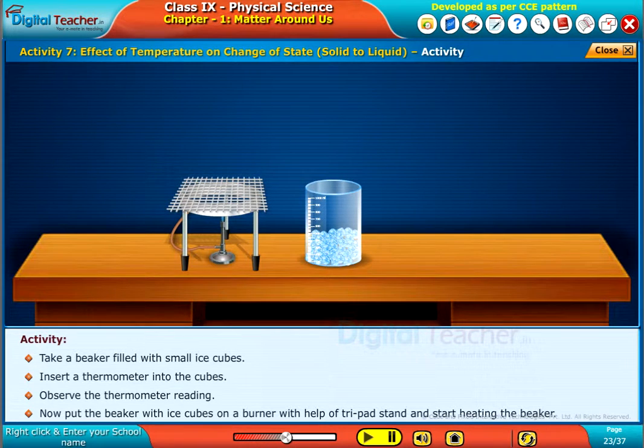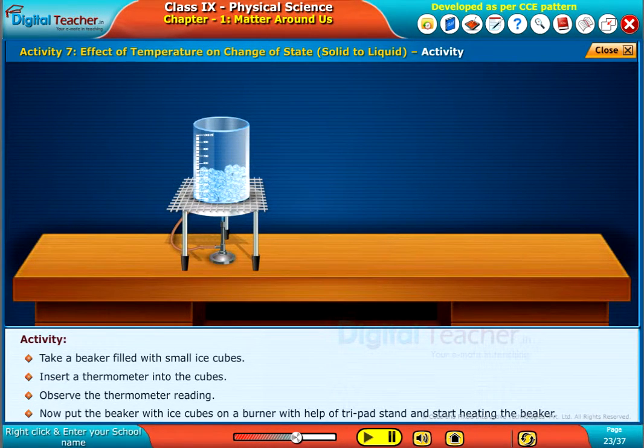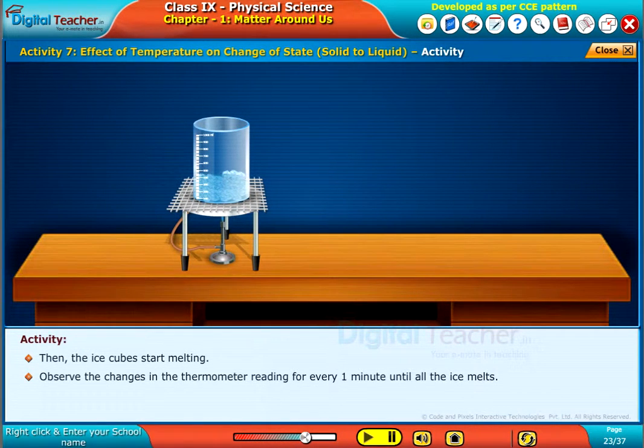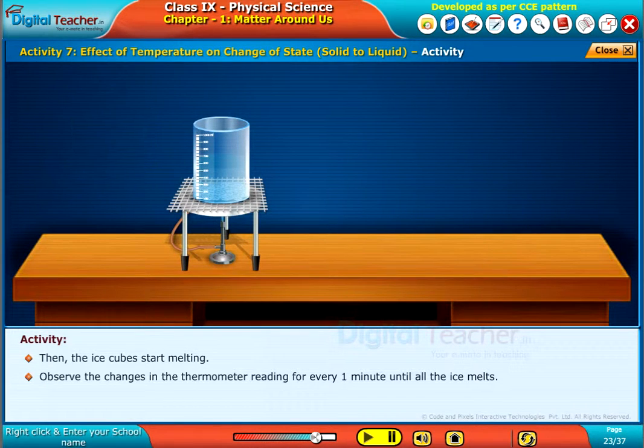Now put the beaker with ice cubes on a burner with help of a tripod stand and start heating the beaker. Then the ice cubes start melting. Observe the changes in the thermometer reading for every one minute until all the ice melts.